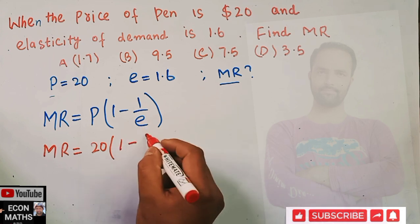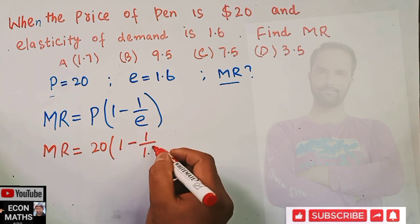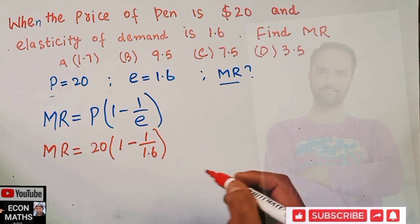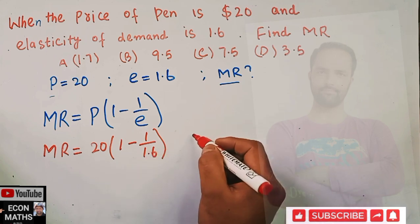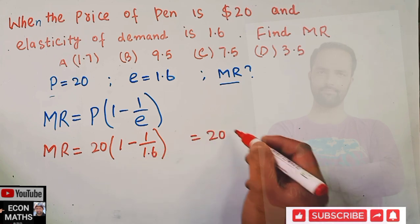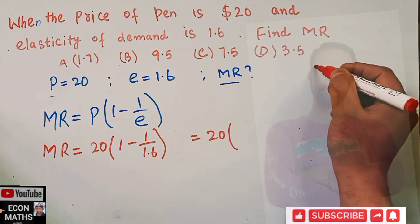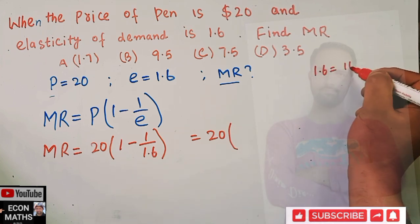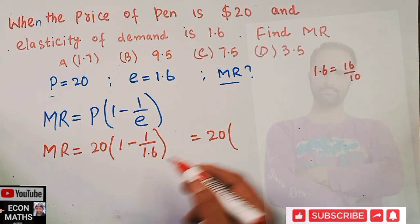When we solve this, we have 20. Now 1.6 can be written as 16 upon 10. So we have 1 upon (16 upon 10). This will become, if we transpose this, 10 upon 16.